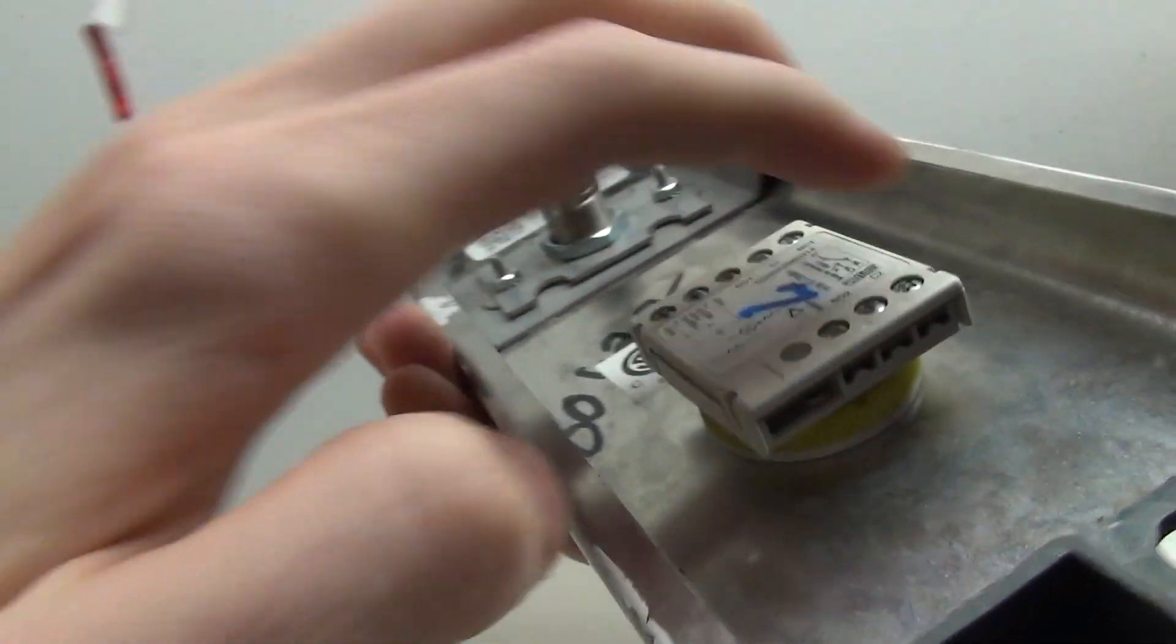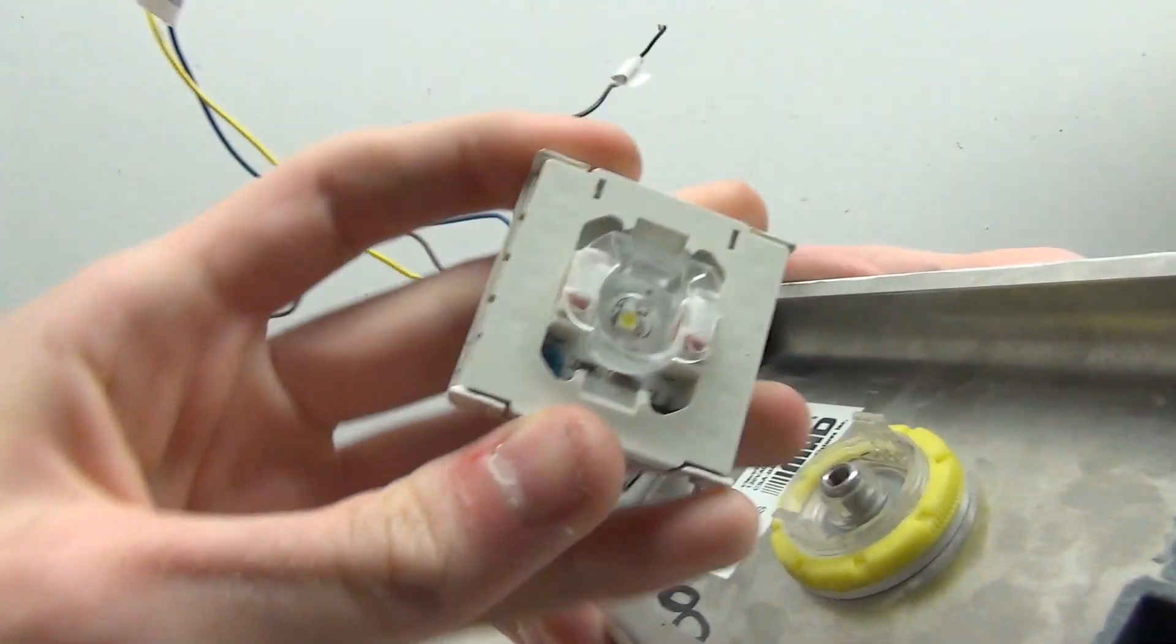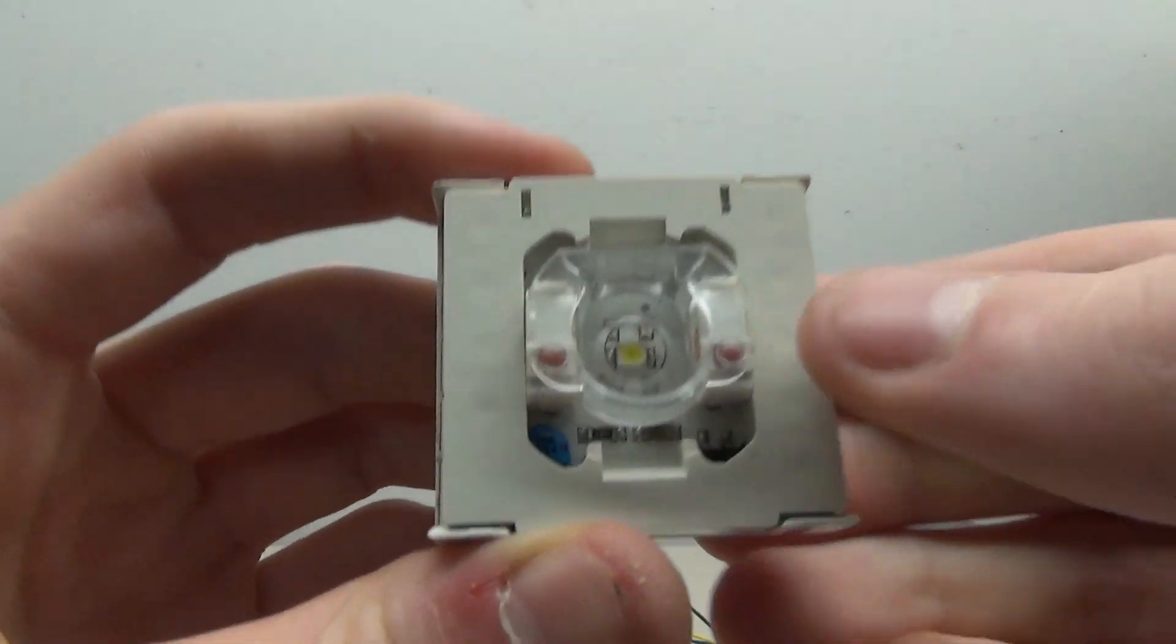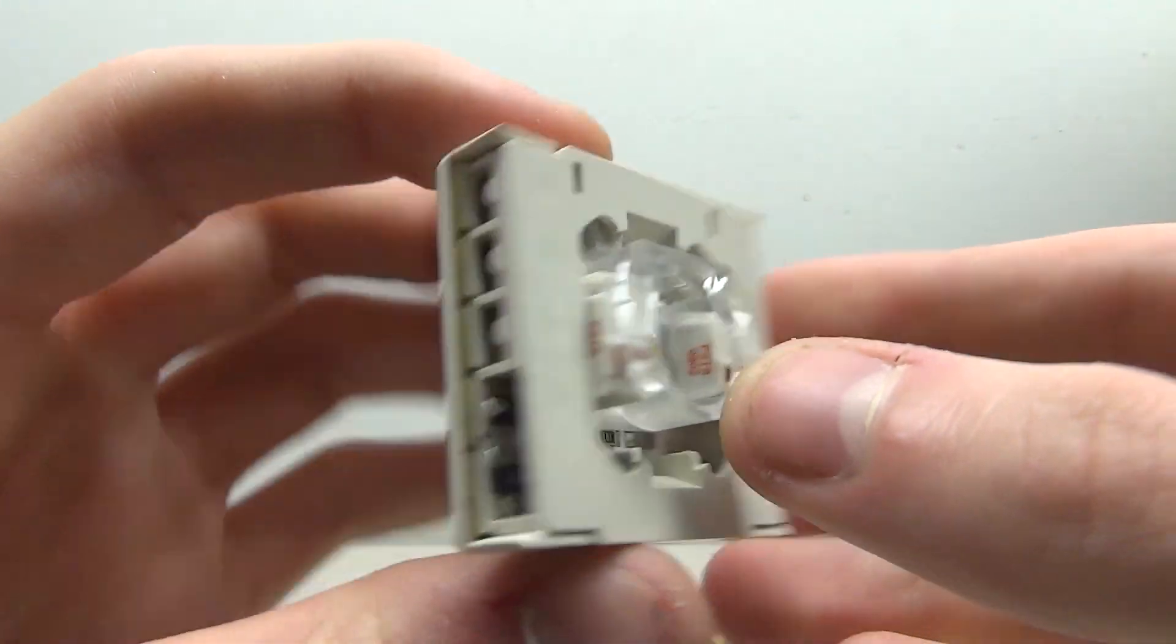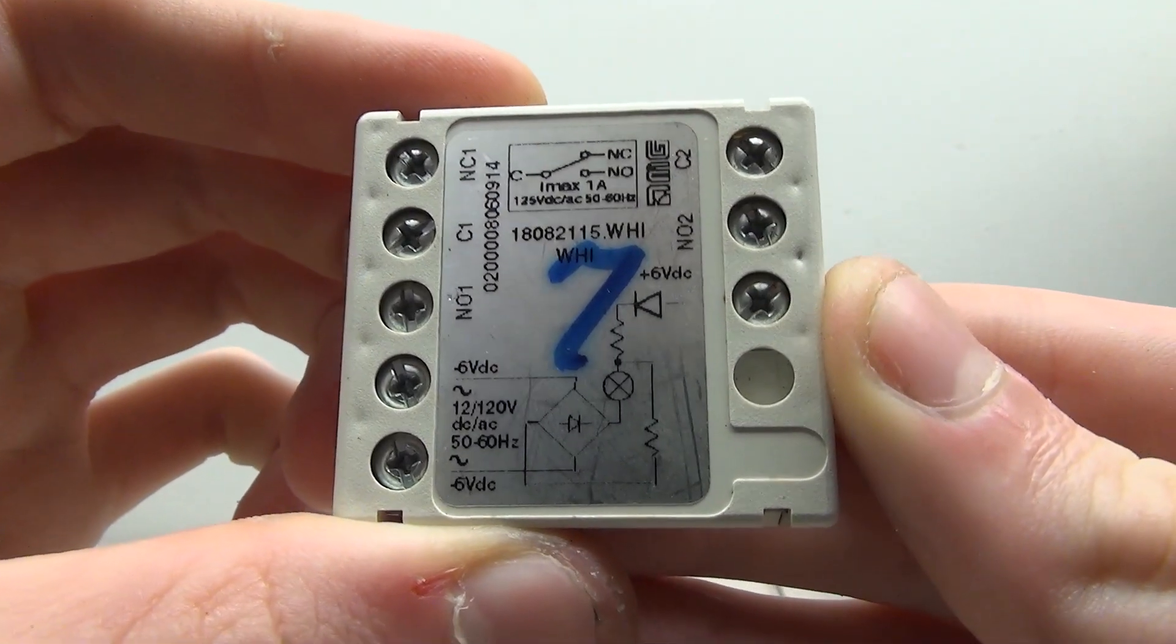Taking this piece off is fairly easy. You have to pull down on one side and lift up with your thumb on the other, and the entire base comes off. This is what the base looks like on the back side. There is a small wiring diagram for the LED and it also shows the pin outs for the switches.